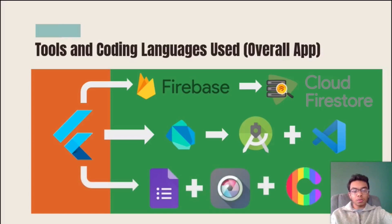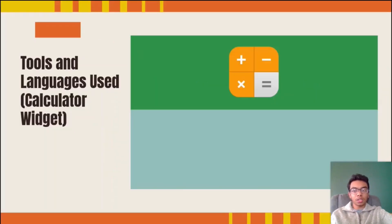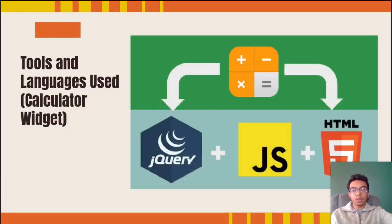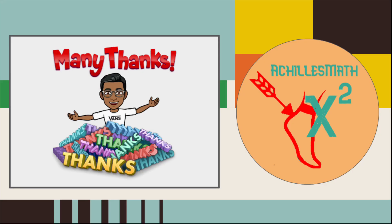Other tools used include Google Forms for user quizzes, Pixlr to build the app logo and design, and Coolers to select the color scheme. To build the calculator widget, JavaScript, jQuery, and HTML5 were also used. Thank you for learning about Achilles Math. Have a great day!